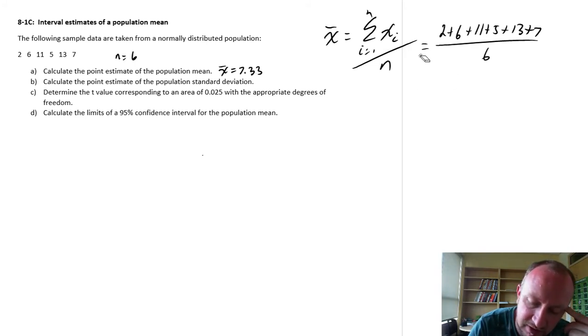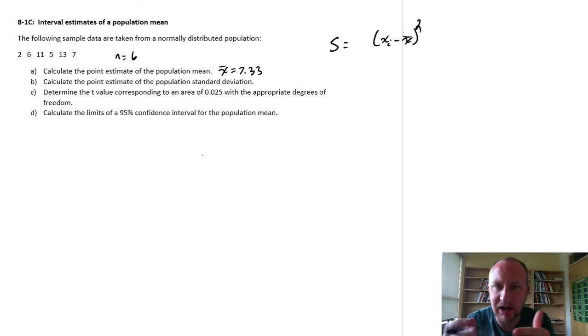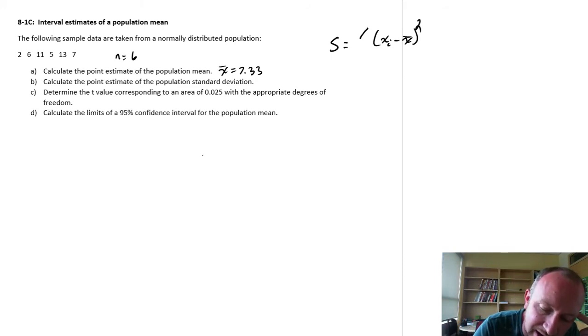Now the next part of this exercise is calculating the standard deviation. Again, the notation makes it look more tedious than it is. Here we're adding up all of these squared deviations. So inside of the brackets, there's a deviation. We square it. We add all of those together. We divide by n minus one and we take the square root of that.